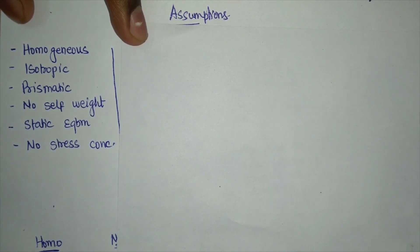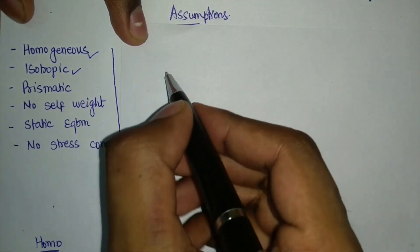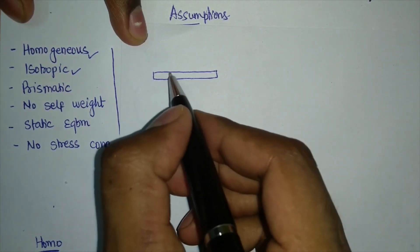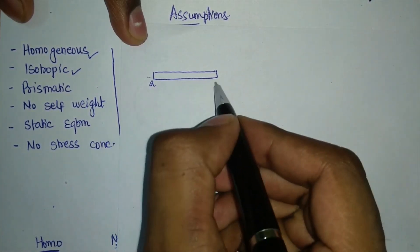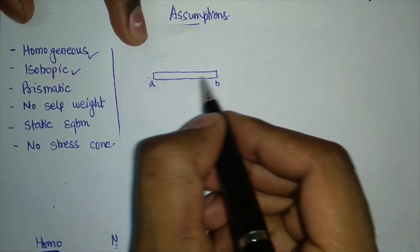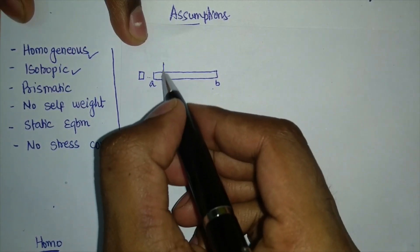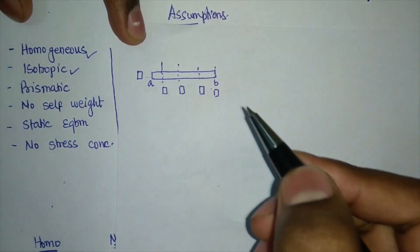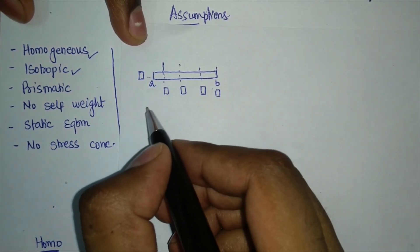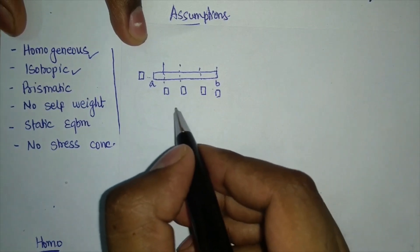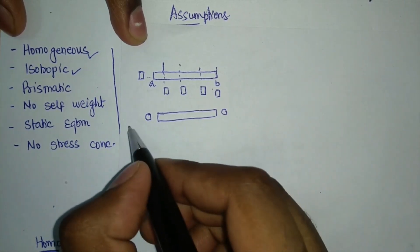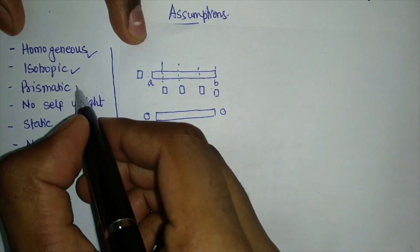Coming back to our assumptions: we have discussed homogeneous and isotropic natures. Now, prismatic nature means that if I am analyzing a beam, the area of cross-section remains the same throughout its entire length. If the cross-section is rectangular at point A, it will remain rectangular with the same dimensions all the way to point B. Similarly, if it is circular, the same circle continues from one end to the other. That is what we mean by prismatic cross-section.